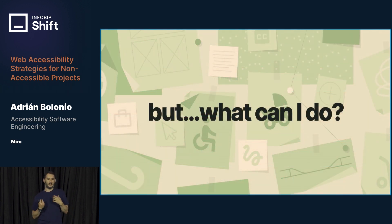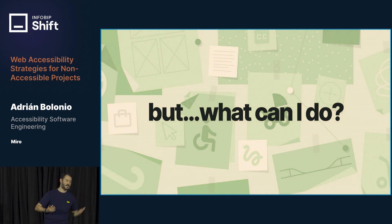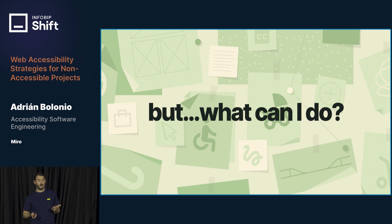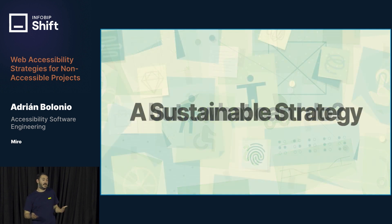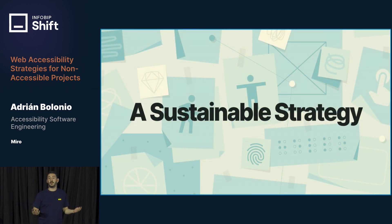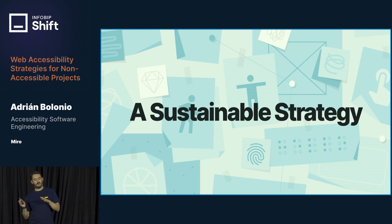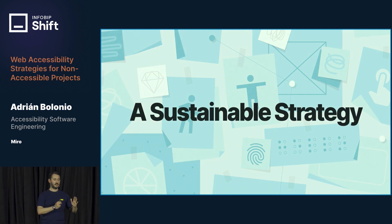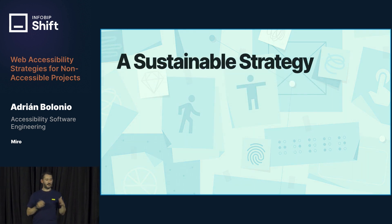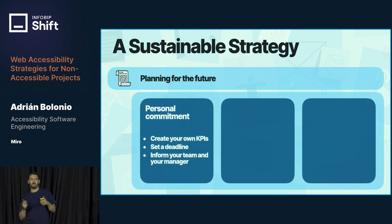Those are the main problems we can find when talking about web accessibility in projects. But maybe you ask, what can I do? What I'm going to present today is something that I've seen work — a sustainable strategy. I'm going to focus on four main pillars. The first one is planning.